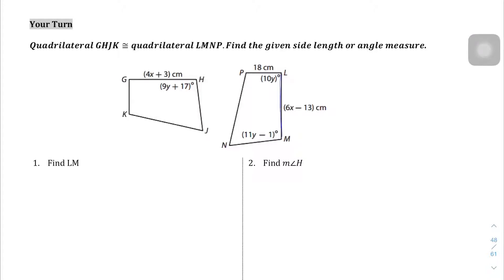LM, in this case, we want to know the length of this side right here, and on the other quadrilateral it's going to be that side. If they are congruent, what that means is that those sides are equal. So we can set up an equation: 4x plus 3, which is the length of side GH, is going to be equal to LM, which is 6x minus 13, the side we're looking for.